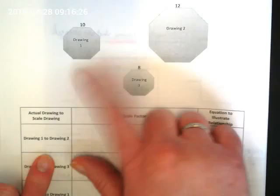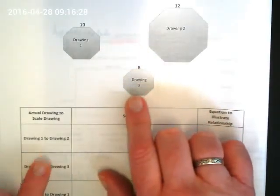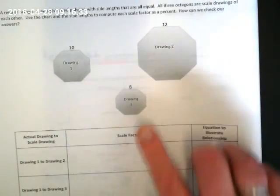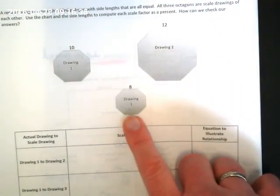And there's three different drawings. And you're changing which is the original and doing some comparisons. What's nice here is that these are regular shapes, meaning all of the side lengths are the same.